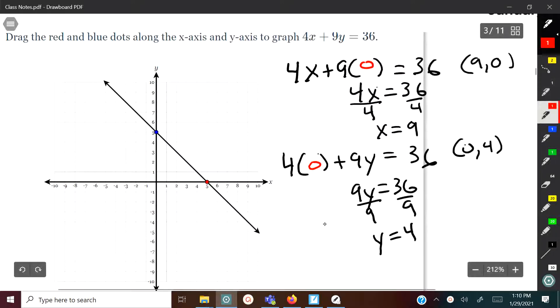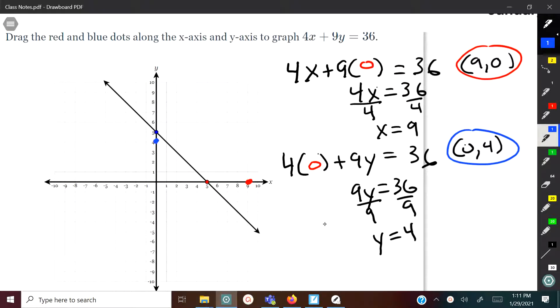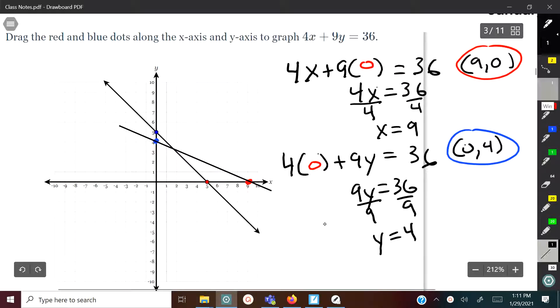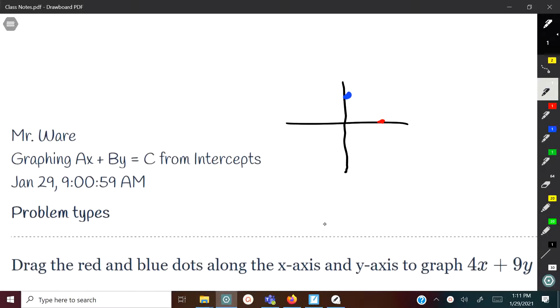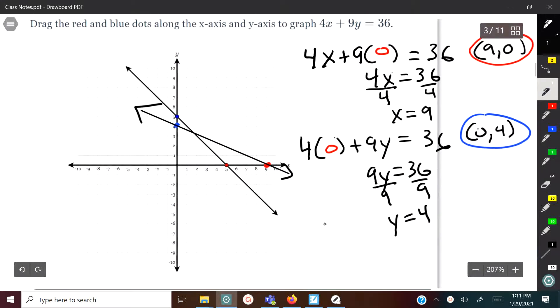Now all you got to do is plot those two points. Here we've got x is nine and y is zero. Let me change some colors here. And then here we've got x is zero and y is four. So on the Delta Math you would just drag those to those different spots and the line will just draw for you. But that's where the line should be. So this is graphing Ax plus By equals C with intercepts, graphing from the standard form with x and y intercepts.